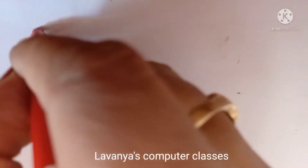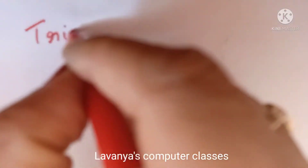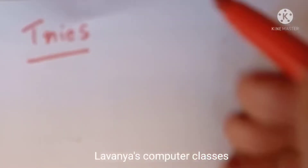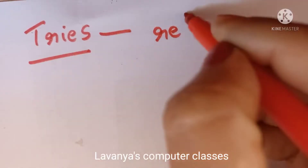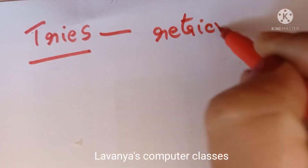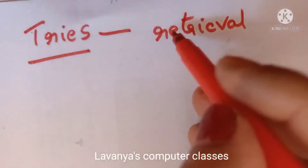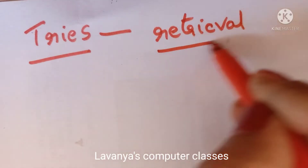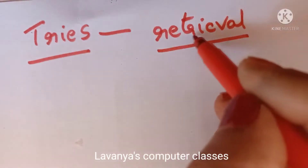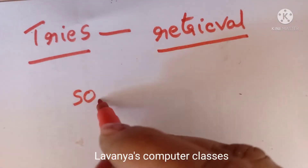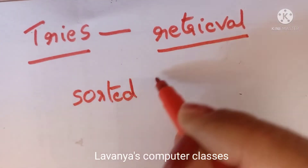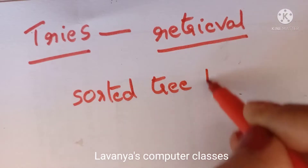Welcome to Lavanya's Kumpir classes. In this video we will look at Trie and its types. So what is a trie? Trie is derived from the word 'retrieval' — that is why it is called a trie. T-R-I-E. Trie is a sorted tree-based data structure.